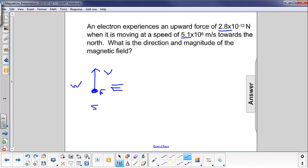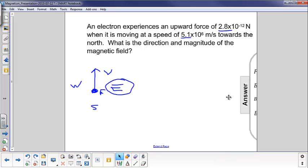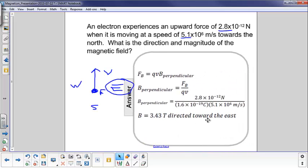So if this were a positive charge, the direction of the magnetic field would be to the west. But since it's an electron, the direction of the magnetic field that gives you that force would be to the east. So now let's do the easy part, the algebra. We're to the east. If this were a proton, the magnetic field would be in the opposite direction.